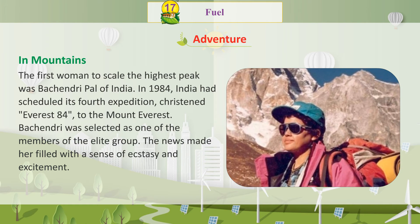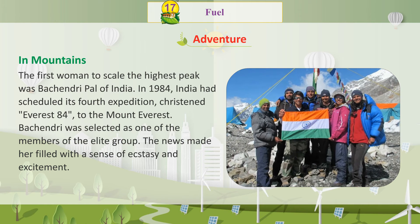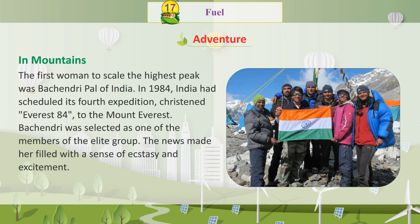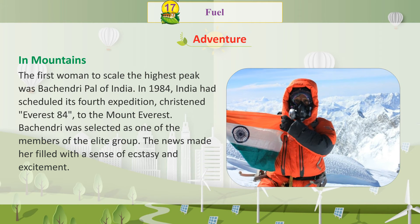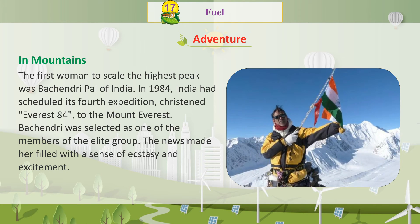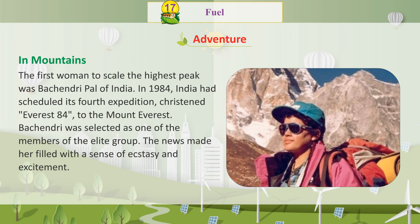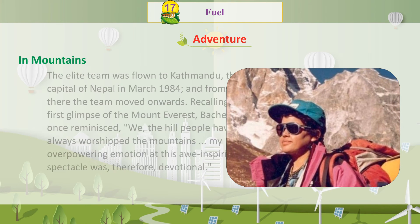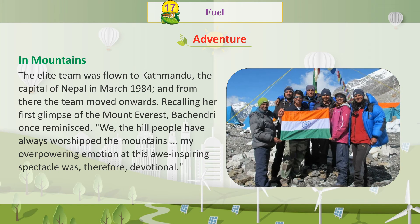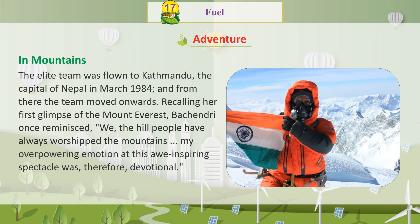The first woman to scale the highest peak was Bachendri Pal of India. In 1984, India had scheduled its fourth expedition, christened Everest 84, to Mount Everest. Bachendri was selected as one of the members of the elite group. The news made her filled with a sense of ecstasy and excitement. The elite team was flown to Kathmandu, the capital of Nepal, in March 1984, and from there the team moved onwards.